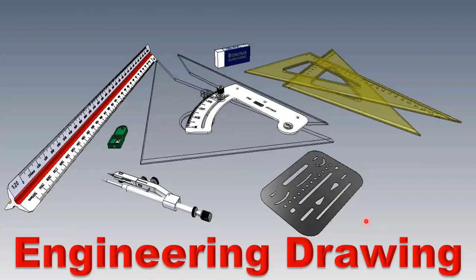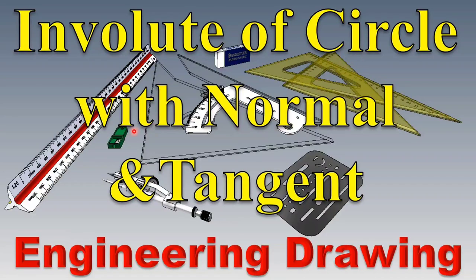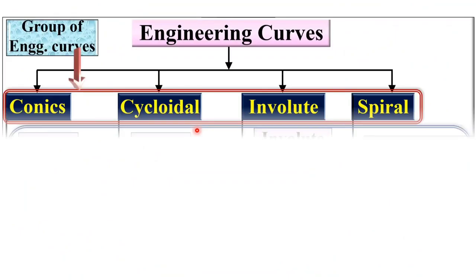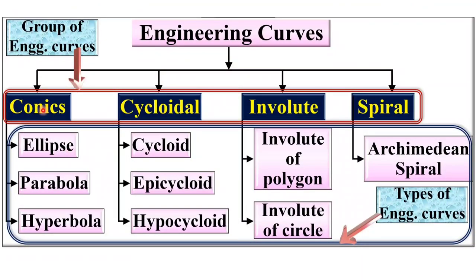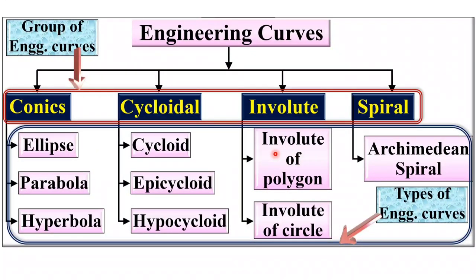Welcome to my engineering drawing playlist. Today I will be explaining involute of a circle with normal and tangent. In the last video we discussed about the different engineering curves from the conics group and from the cycloidal group. Now it's the turn for the involute group. We have also seen in the previous video about the involute of polygon, so now we are going to discuss about the involute of circle.